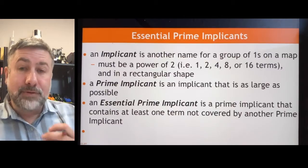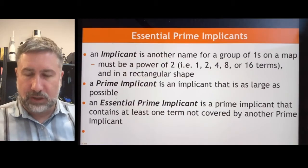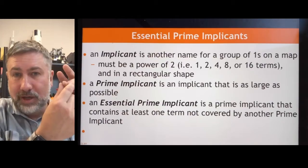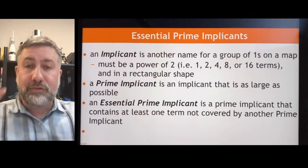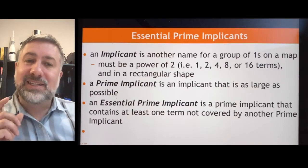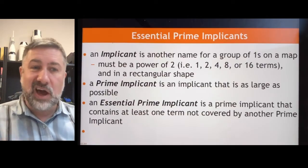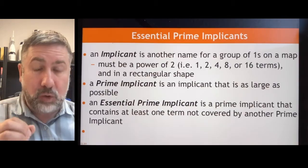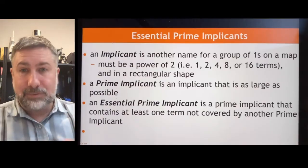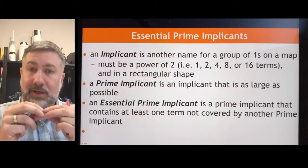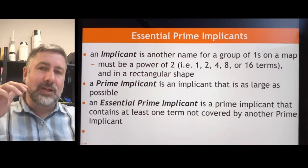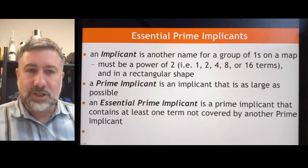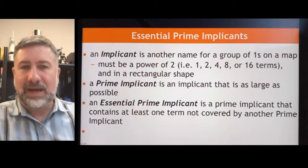An implicant is just a group of ones. A prime implicant is the name we use for the largest possible group of ones. If you have a group of 4 in a cluster, you could make a valid implicant with the top 2 and the bottom 2, but the prime implicant would include all 4 — as long as they are in a rectangle and a power of 2. An essential prime implicant is a prime implicant that contains at least one term not covered by another prime implicant, meaning it has to be there because it includes at least one minterm that isn't covered any other way.